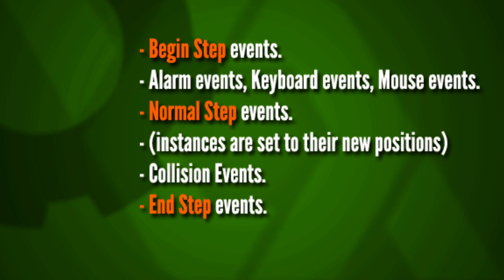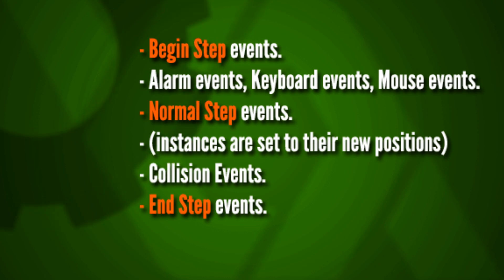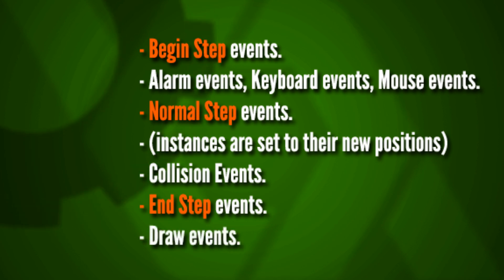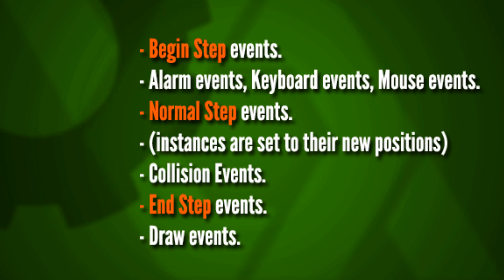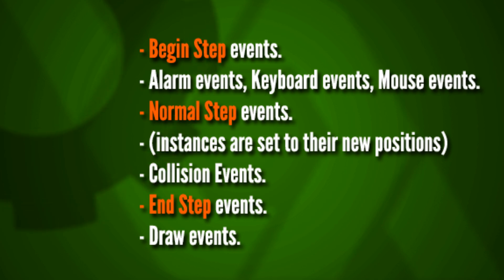After collision events are all checked and processed, that's when the end step event occurs — after objects are set to their new positions and after collision events occur. After the end step event, the only thing left, which always happens at the end of every frame, is the draw event, so all the results of your various events and actions are rendered to the screen. How you use these events comes down to whenever you need to do something in a very specific order or at a very specific timing during the frame.